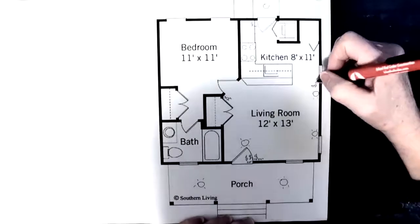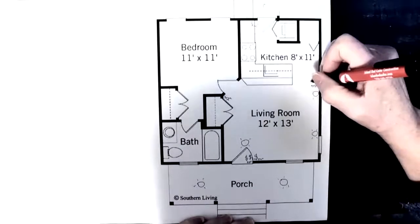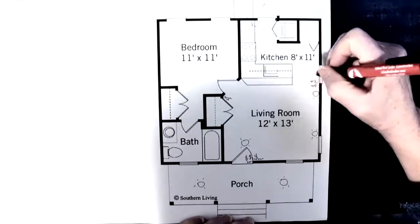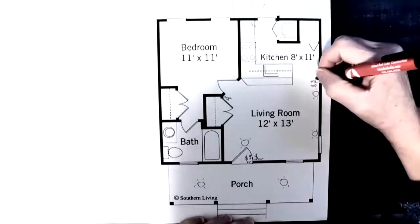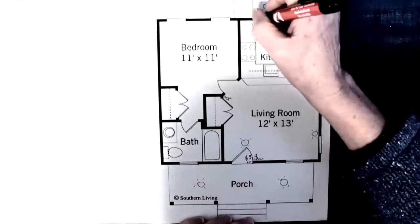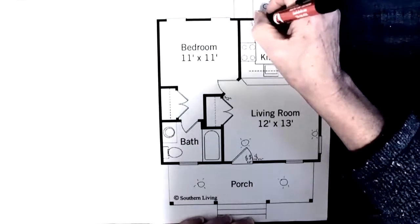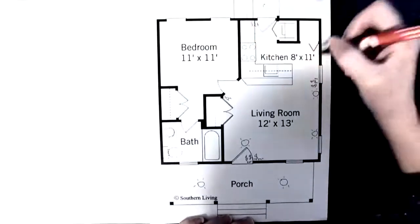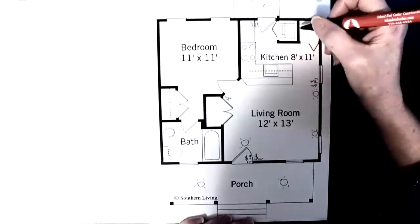And then when I reach this area right here, I'm going to want to put another switch on that wall. It's probably going to be a three-way switch as well. And it gets me to the back door. And that's going to be for my kitchen lighting.